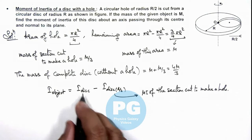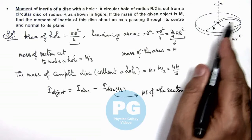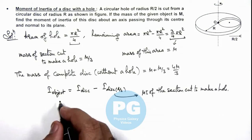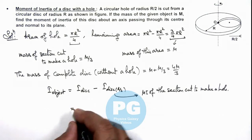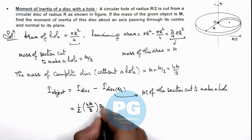So out of the total moment of inertia, if we subtract the moment of inertia of this small disc which is of radius R/2, then we get the moment of inertia of this object. So for the whole disc it is half of (4M/3) multiplied by R².